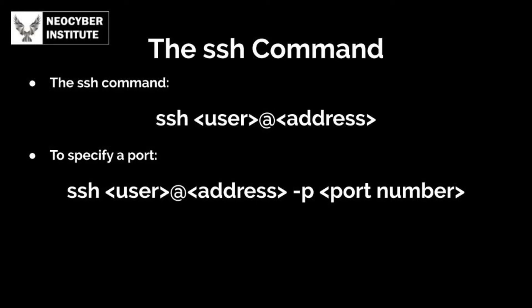The command to connect is simply SSH followed by a few parameters. You can see the structure of it on your screen. From left to right, input the username you're connecting as, the at symbol, the address or IP of the remote computer, and any additional parameters you'd like. Commonly, especially in CTFs, you are asked to connect via a specific port number. To do this, you add "-p" followed by the port number.